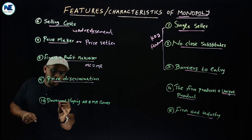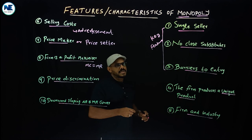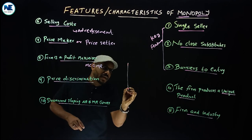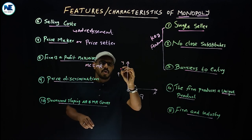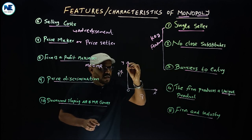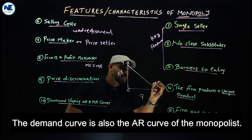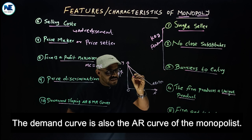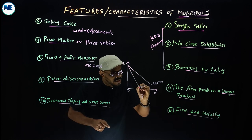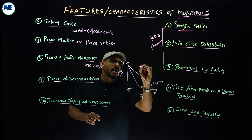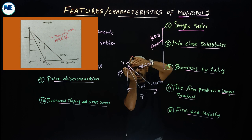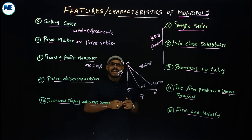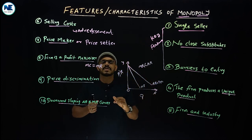The last feature is downward sloping average revenue and marginal revenue curves. The average revenue curve is downward sloping, and average revenue is equal to the demand curve. The marginal revenue curve is also downward sloping — it touches the zero axis or x-axis and becomes negative. The marginal revenue is always less than the average revenue. The average revenue also represents the demand curve. All these curves slope downward from left to right, as already discussed in the previous video.